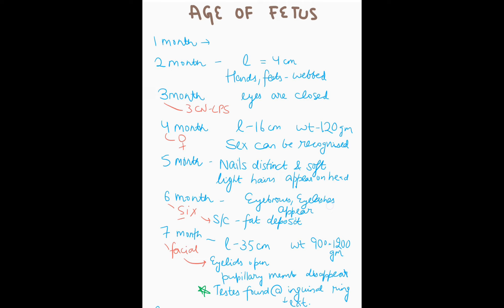At three months, the eyes are closed because the levator palpebrae superioris — the muscle of the eyelid — is not functioning. It is supplied by the third cranial nerve. So at the third month, eyes are closed.